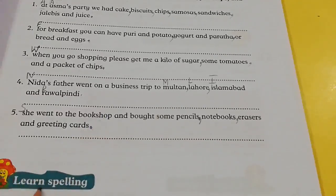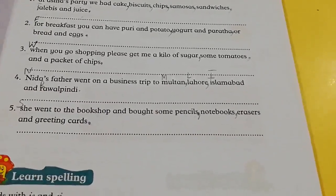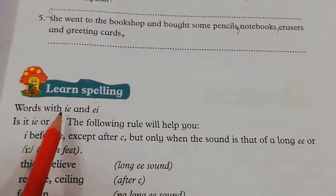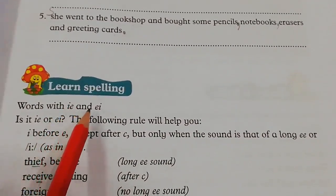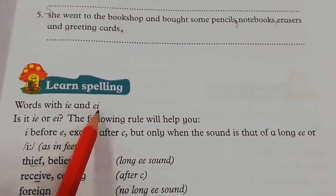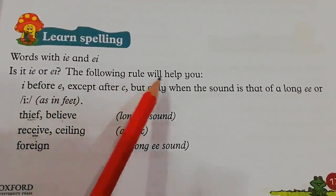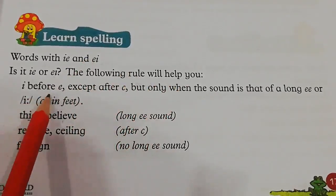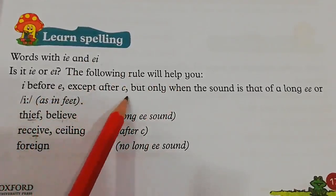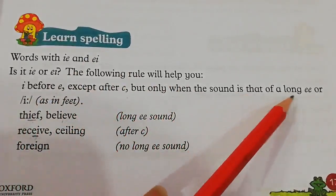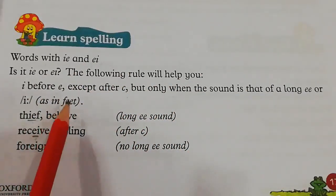Moving on towards our next question: Learn spelling — words with IE and EI. Students, some words have an I sound and some have an E sound. Is it I or E? The following rule will help you: I before E, except after C, but only when the sound is that of a long E, as in 'feet'.